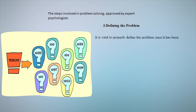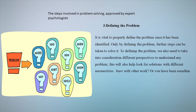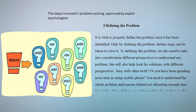Defining the problem is the second step — it is vital to properly define the problem once it has been identified, as only then can further steps be taken to solve it. To define the problem we also need to consider different perspectives. For example, if you have not been allocating enough time for study, you need to find the reason — have you been postponing studies, too busy with other work, or spending too much time on a mobile phone?